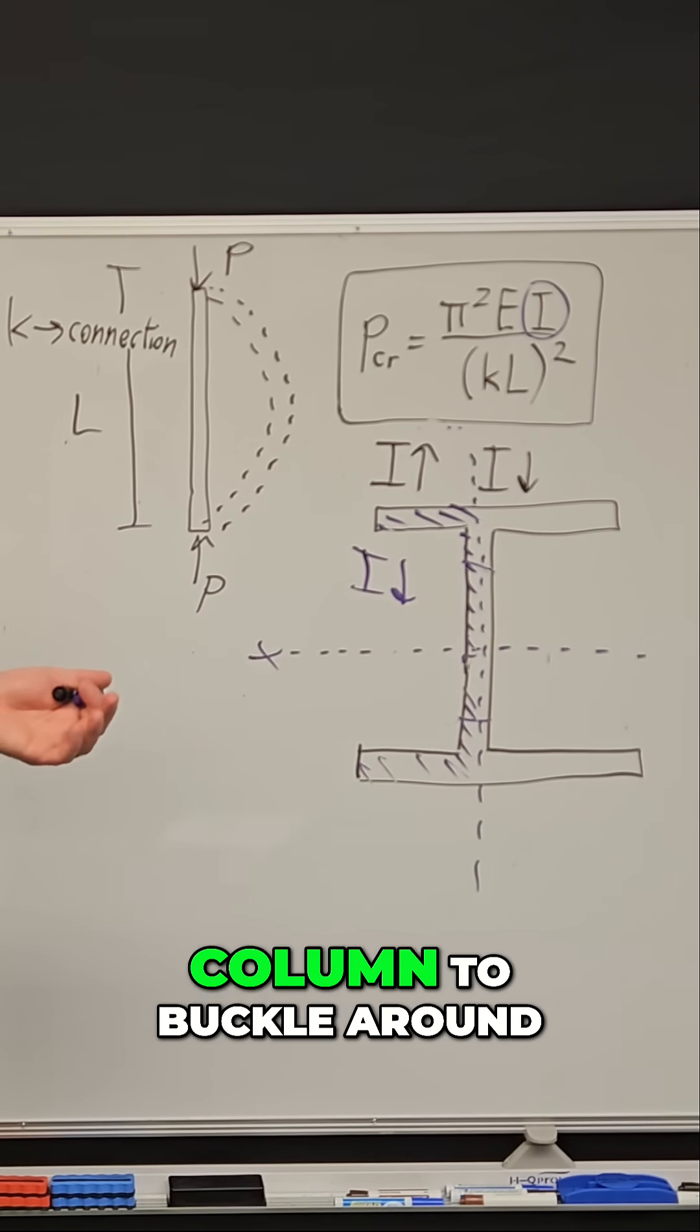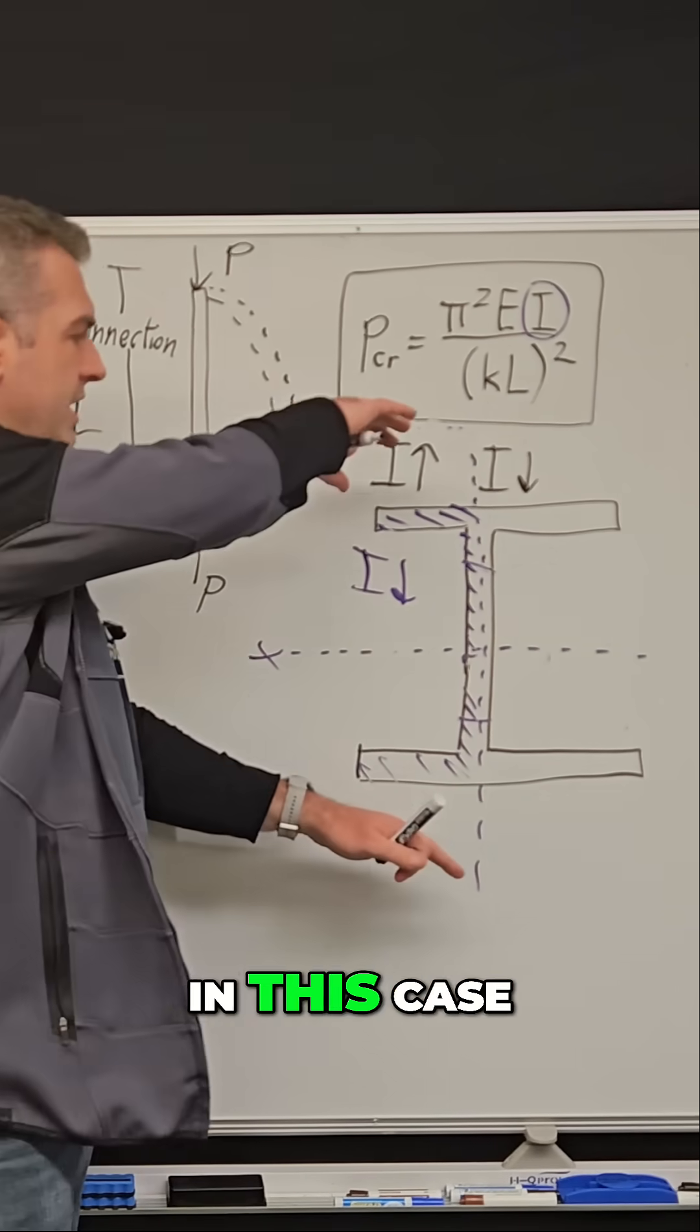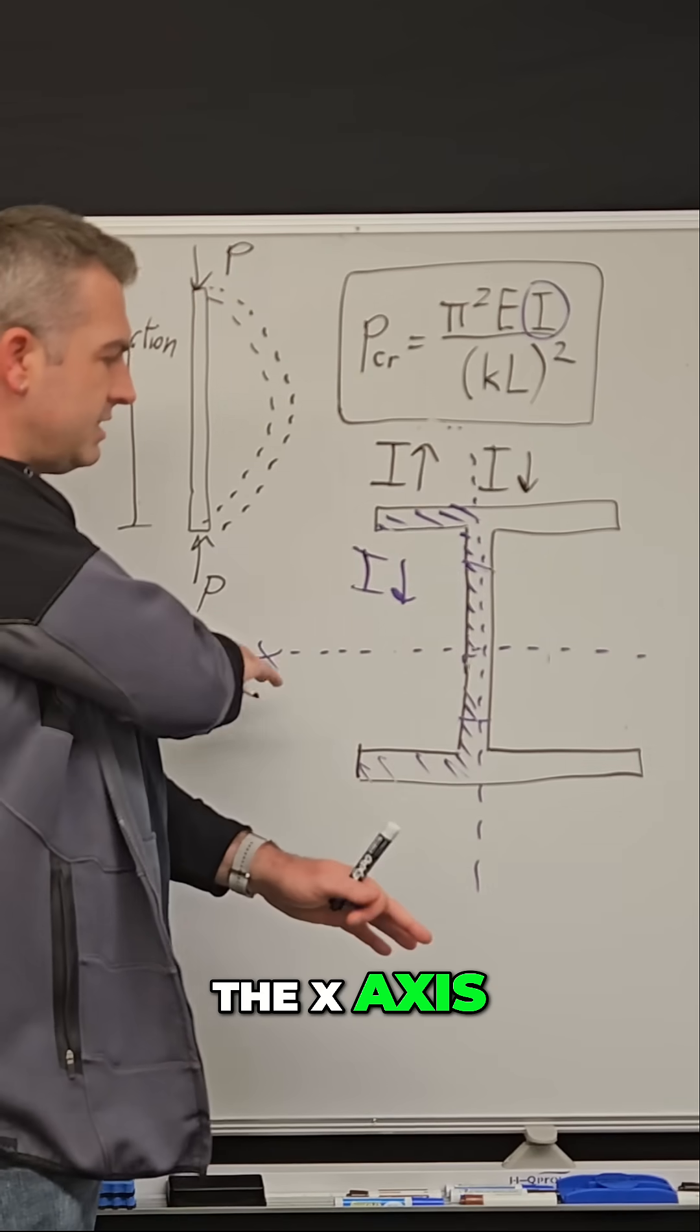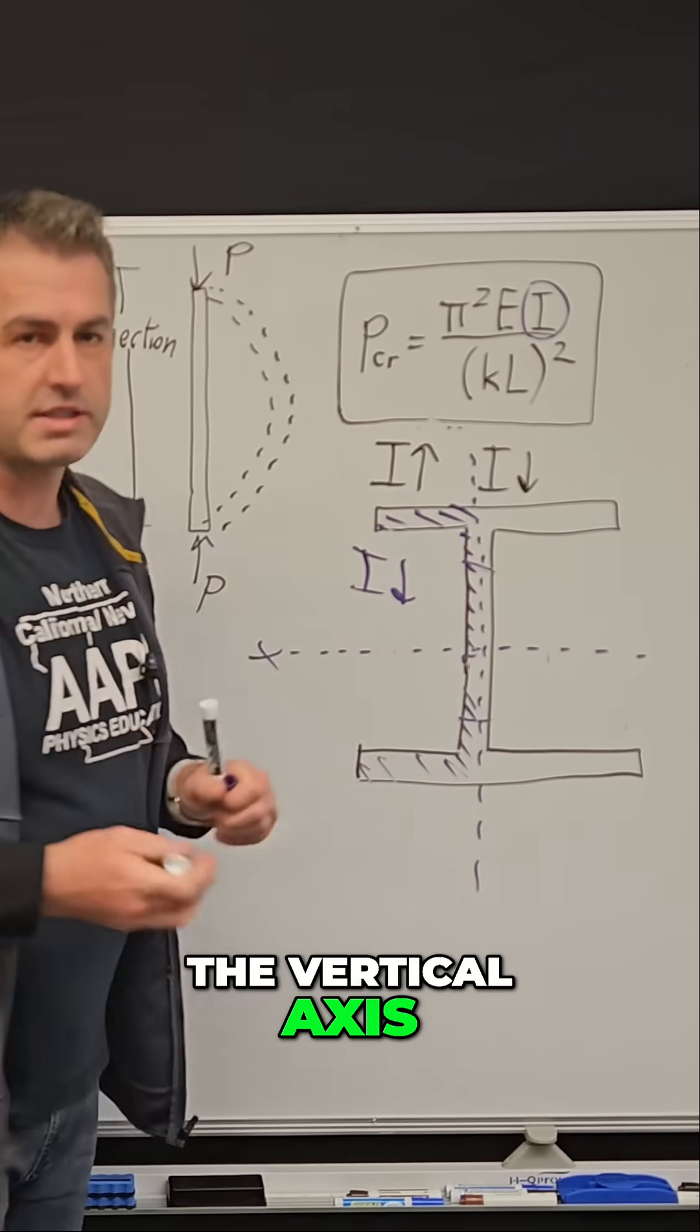So we really want a column to buckle around, in this case, the X-axis and not around the Y-axis, the vertical axis.